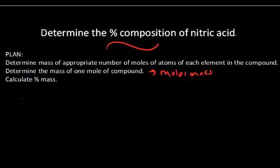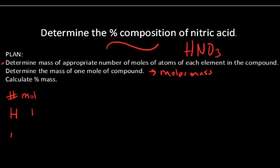First, determine the appropriate number of moles of atoms of each type of element in nitric acid, HNO3. There is one mole of hydrogen in every one mole of compound, one mole of nitrogen in every one mole of compound, and three moles of oxygen in every one mole of compound.